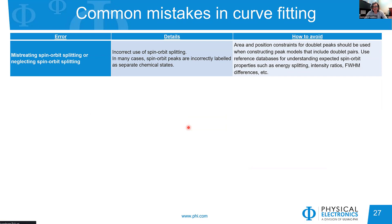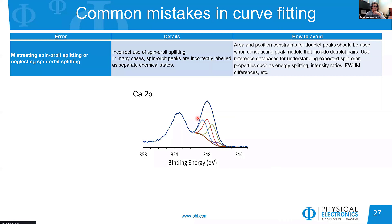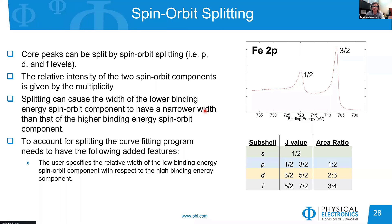Spin-orbit splitting is probably one of the most challenging topics in the literature, even though so much information is available. Here's an example where in calcium 2p, you have 3/2 and 1/2 components, but only the 3/2 component was used for background correction and fitting. There is a lot of information we know about spin-orbit splitting that we can use to constrain area, position, and FWHM differences for doublets.